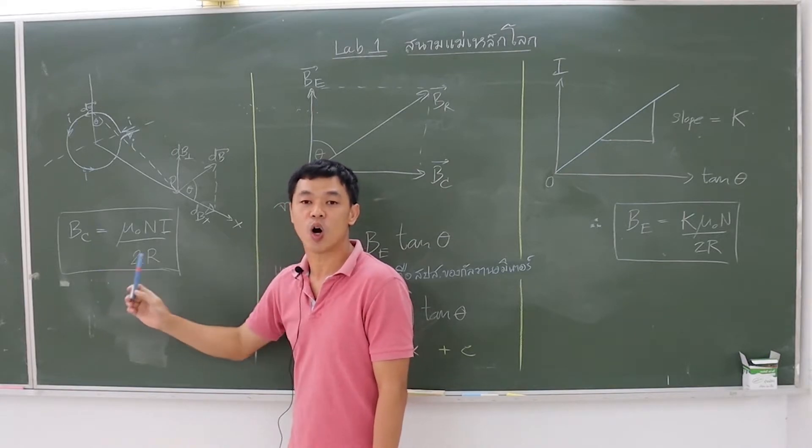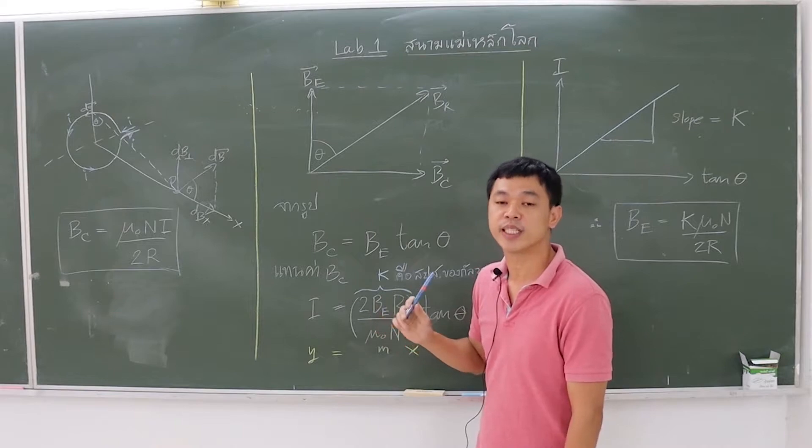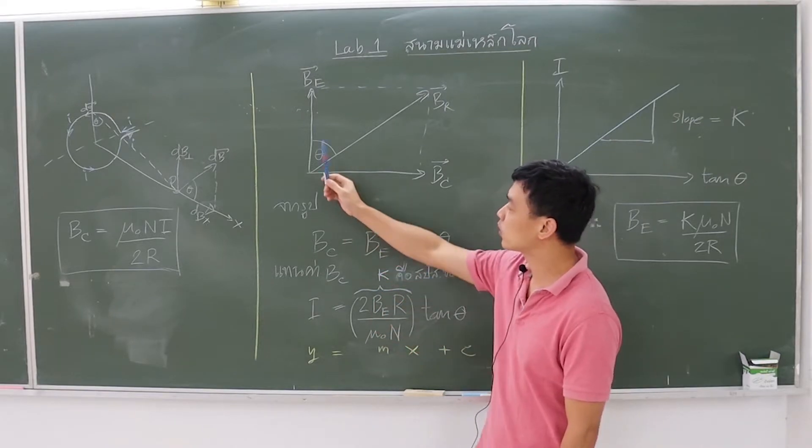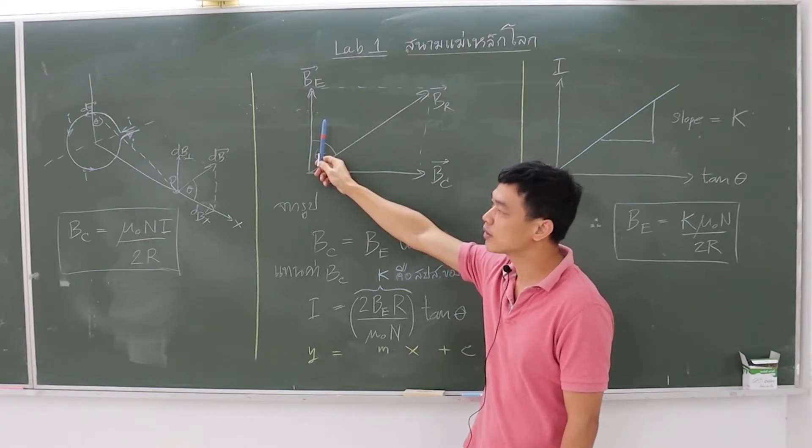If we design an experiment using a compass to show the direction of the Earth's magnetic field perpendicular to the magnetic field produced by a coil, we can draw both field vectors as shown in the figure.